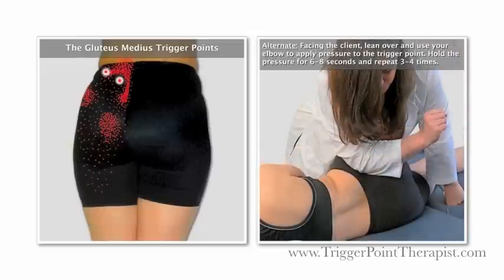As an alternative, you can use an elbow to release this trigger point. Walk around to the other side of the table and face your client. Lean over and use your elbow to apply pressure to the trigger point. Hold the pressure for six to eight seconds using client feedback, and then repeat three to four times.